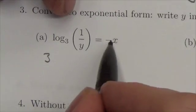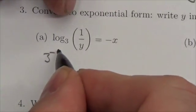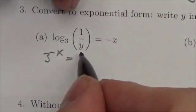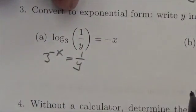A logarithm is an exponent, so the exponent is going to be negative x, and then the argument of the logarithm is what the power equals.